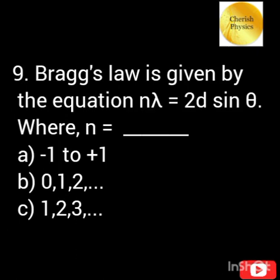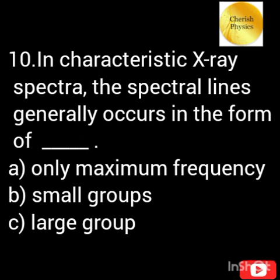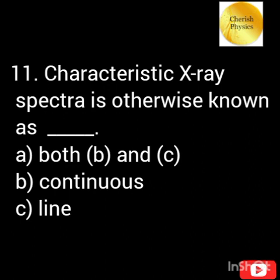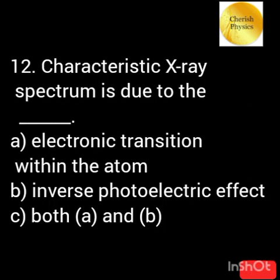The order of n in Bragg's law is? In characteristic X-ray spectra, the spectral lines generally occur in the form of? Characteristic X-ray spectra is otherwise known as? Characteristic X-ray spectrum is due to the?